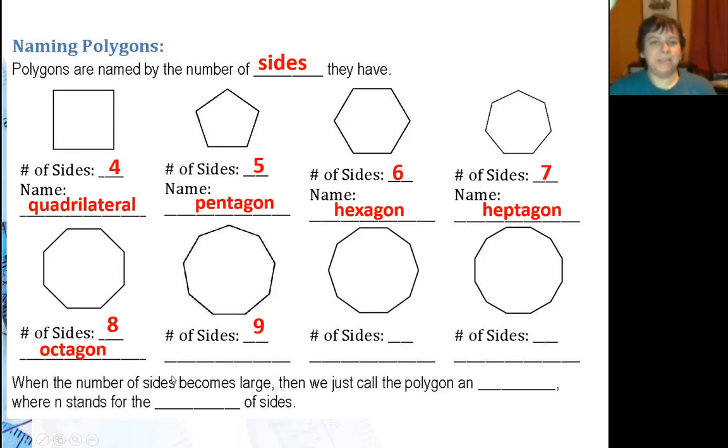We have nine sided polygons and those are called nonagons. And ten sided polygons are called decagons. So if you think of decade for ten years, decagons for ten sides.